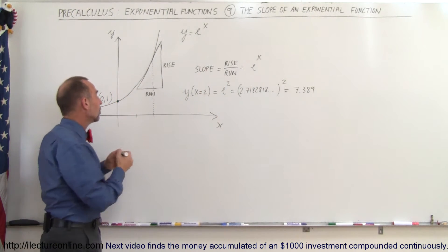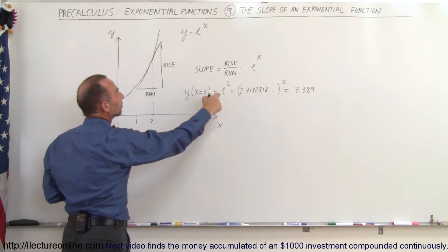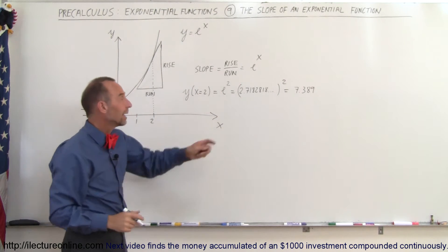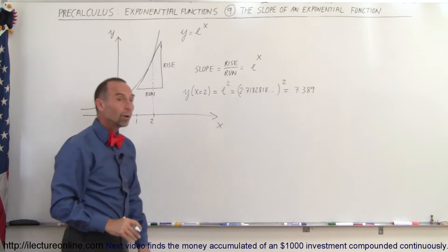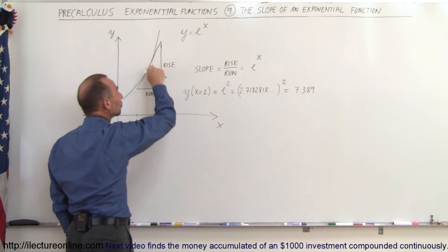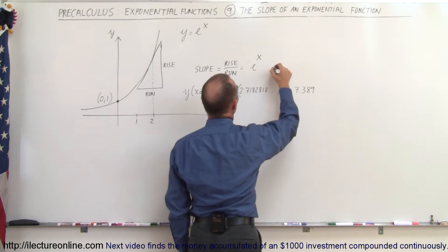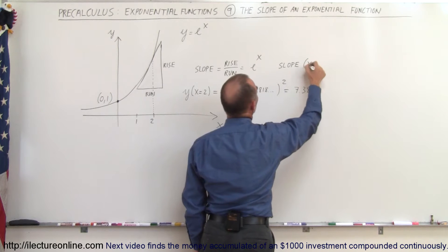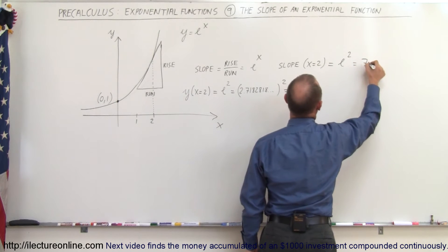Now let's say that x is equal to 2 and we want to know the value of the function. Since y is equal to e to the x, then y when x equals 2 will be e to the second power. If we take the natural number e and square it, we get approximately 7.389. What we're then saying is that when x is equal to 2, the slope of the function at that point is also equal to 7.389.